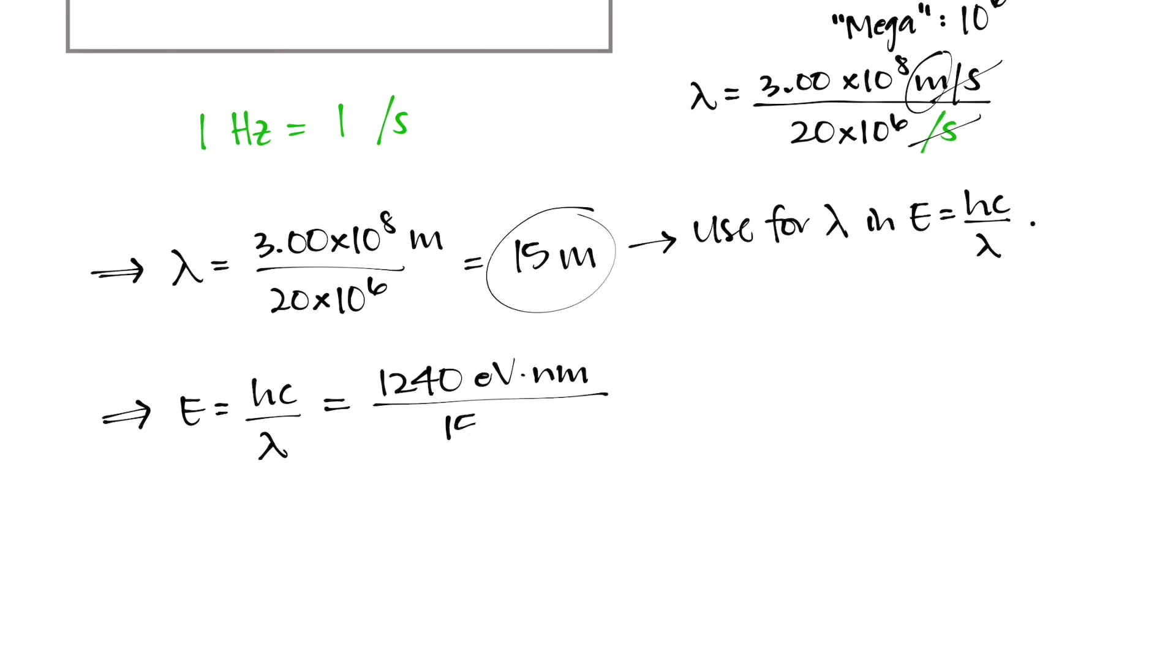But now here's the issue we run into. We have nanometers at the top of the fraction and meters in the bottom of the fraction. So one way we can figure this out is by changing nanometers into meters or meters into nanometers, but we have to convert one or the other into the other unit so that they can cancel out. Otherwise, we're stuck with some sort of an order of magnitude issue and that's not going to be good.